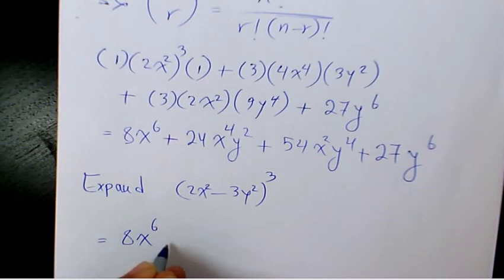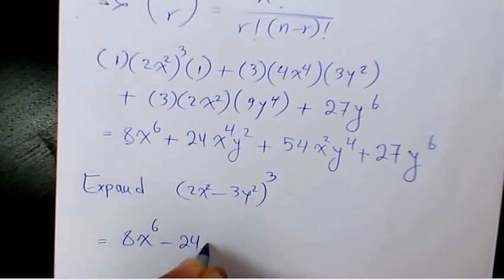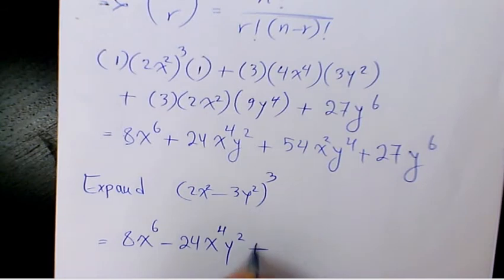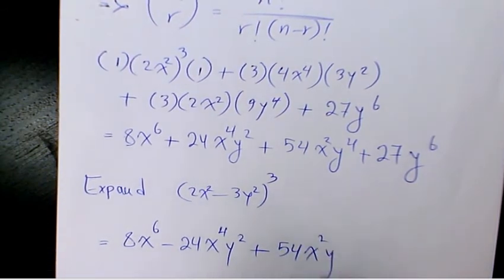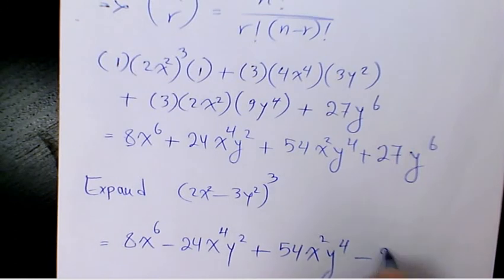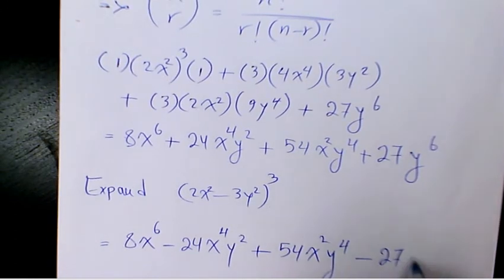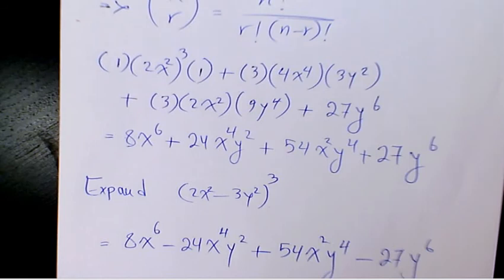So the answer is going to be 8x⁶ minus 24x⁴y² plus 54x²y⁴ minus 27y⁶. That's going to be the expansion of (2x² minus 3y²) to the power of 3. That's the final answer.